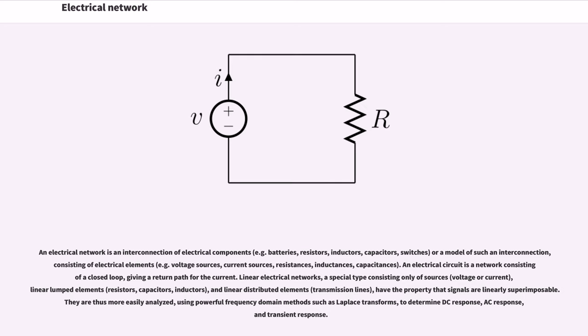Linear electrical networks, a special type consisting only of sources, voltage or current, linear lumped elements, resistors, capacitors, inductors, and linear distributed elements, transmission lines.